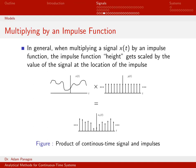Let's continue talking about the continuous time impulse function. Let's talk about what happens when we have a continuous time signal x of t — just a little cartoon of the continuous time signal x of t — and what happens when we multiply it by an impulse function, or maybe even a sequence or train of impulse functions.